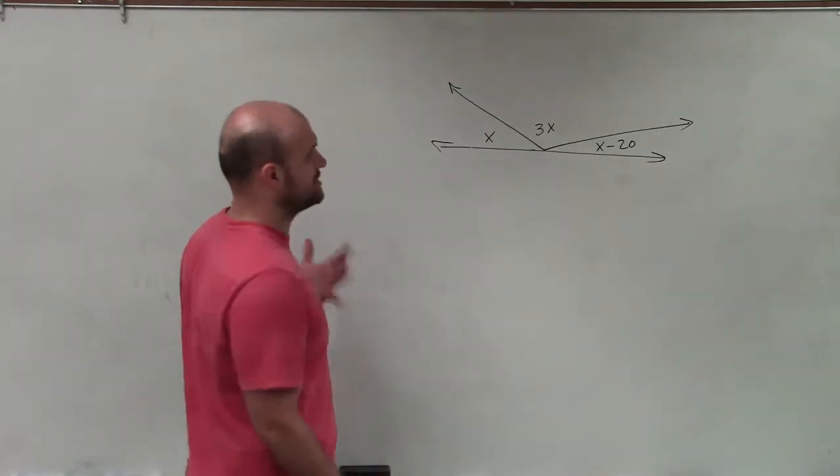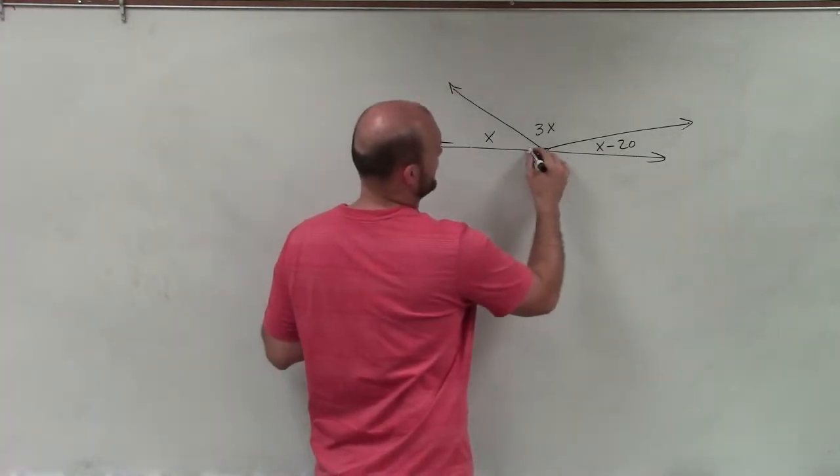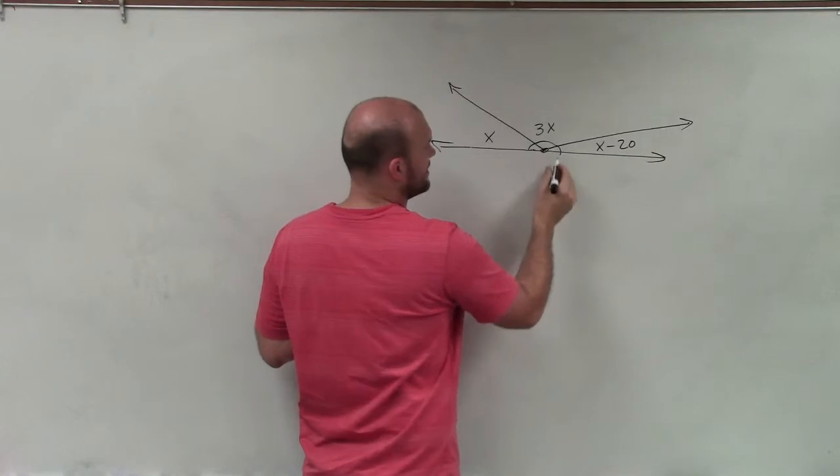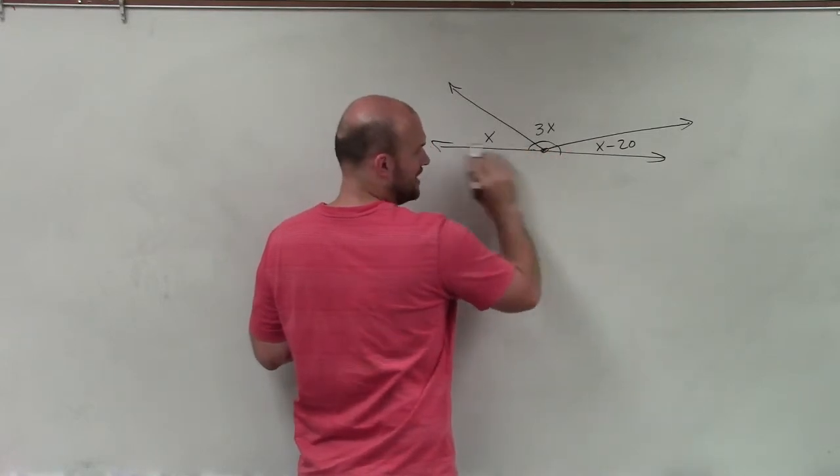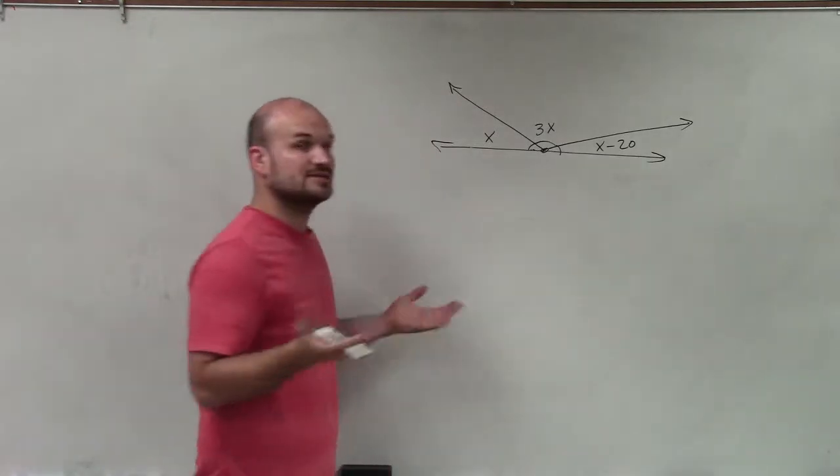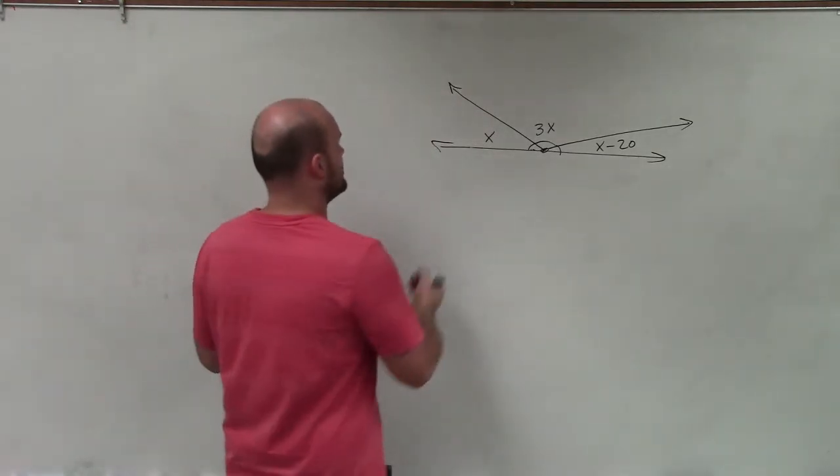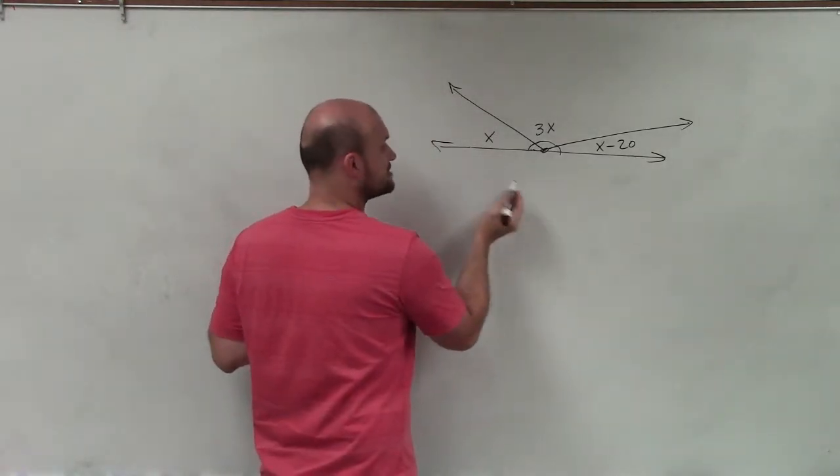One thing we look at with this linear relationship is we can see that if I take all these angles, they make up a whole line. All of them added up together make up this straight line, which would be a straight angle, which is equal to 180 degrees. So therefore, I can say that these are all supplementary.